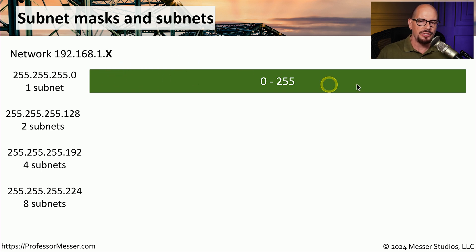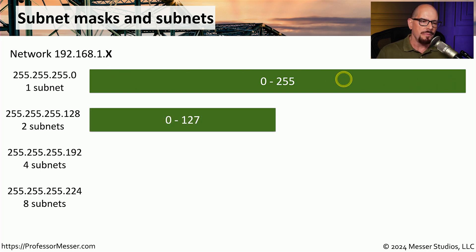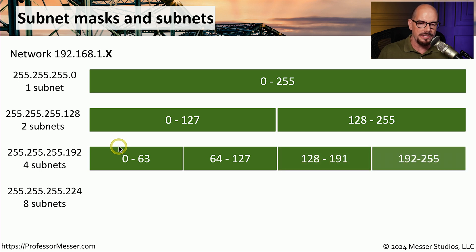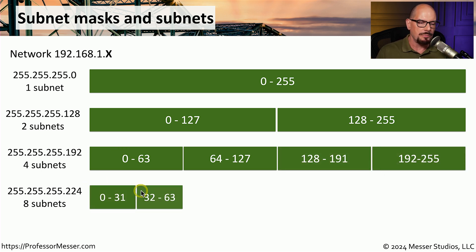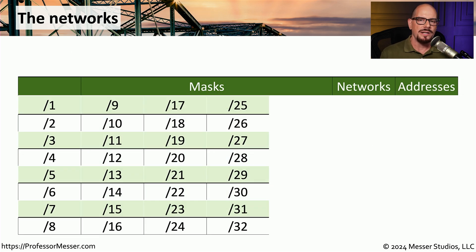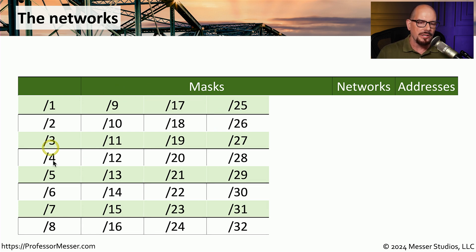You may start with a network that has 256 total hosts available, or you might break it up into smaller subnets such as a .128 with two different subnets, a .192 which separates it into four subnets, or a .224 that separates it into eight individual subnets, and so on. The core of the seven-second subnetting process is creating a chart that defines the subnet masks, allowing you to quickly determine the decimal mask from a CIDR block notation and vice versa.